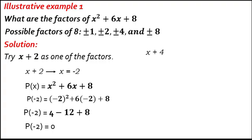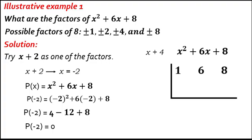Write down the numerical coefficients of x squared plus 6x plus 8: 1, 6, 8. The value of c from x plus 4 is negative 4. Bring down the first coefficient, 1. Multiply 1 by negative 4, the answer is negative 4. Add: 6 plus negative 4 equals 2. Then 2 times negative 4 equals negative 8. Finally, 8 minus 8 equals 0. The remainder is 0, so x plus 4 is a factor of x squared plus 6x plus 8.